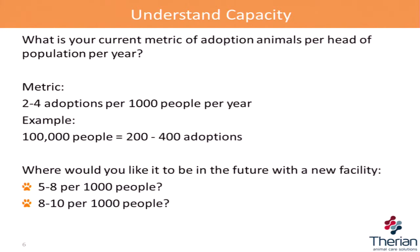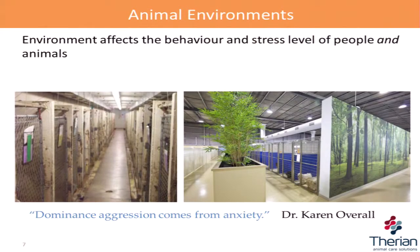Understanding capacity: what is your current metric of adoptions per head of population? Many people say they've never looked at it that way, but for the population in your local area, how many dogs, cats, whatever are you adopting out per head of population? Is it two to four adoptions per thousand people? Five to eight? Eight to ten? Where do you want to be? These numbers help us determine the size the facility needs to be — you obviously don't want to build something too small or too big.